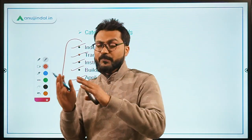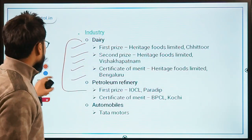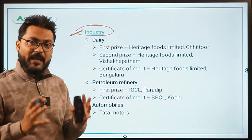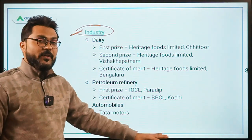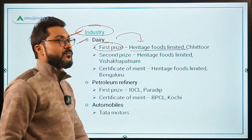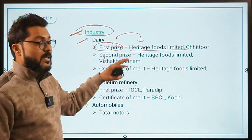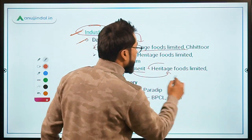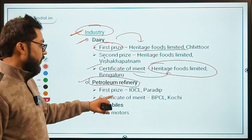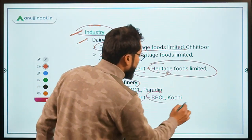We will focus on the important winners. In the industry category, under the dairy subcategory: the first prize went to Heritage Foods Limited in Chittur, second prize to Heritage Foods Limited from Visakhapatnam, and the certificate of merit to Heritage Foods Limited from Bengaluru. In the petroleum refinery subcategory, the first prize went to IOCL Paradip, no second prize was awarded, and the certificate of merit went to BPCL Kochi Refinery.